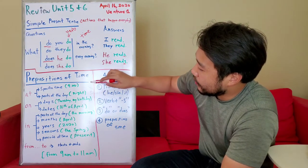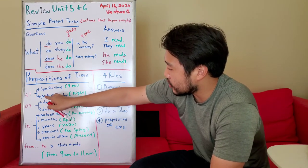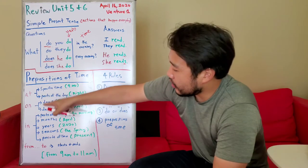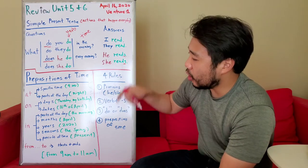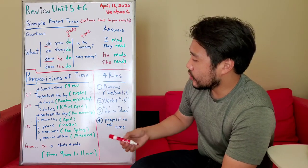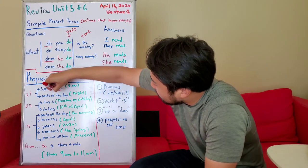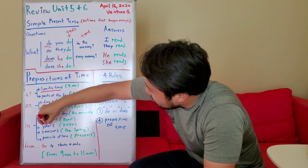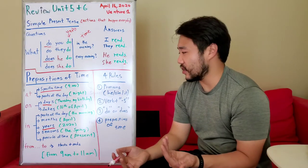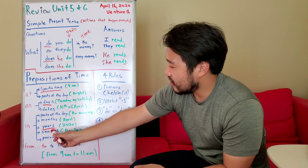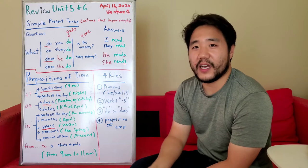An easy way to remember 'at,' 'on,' and 'in' is that the time gets longer as you go from 'at' to 'in.' 'At' is for specific times, 'on' is for days, and 'in' is for years and longer periods. You can see that years are longer than days, and days are longer than a specific time.